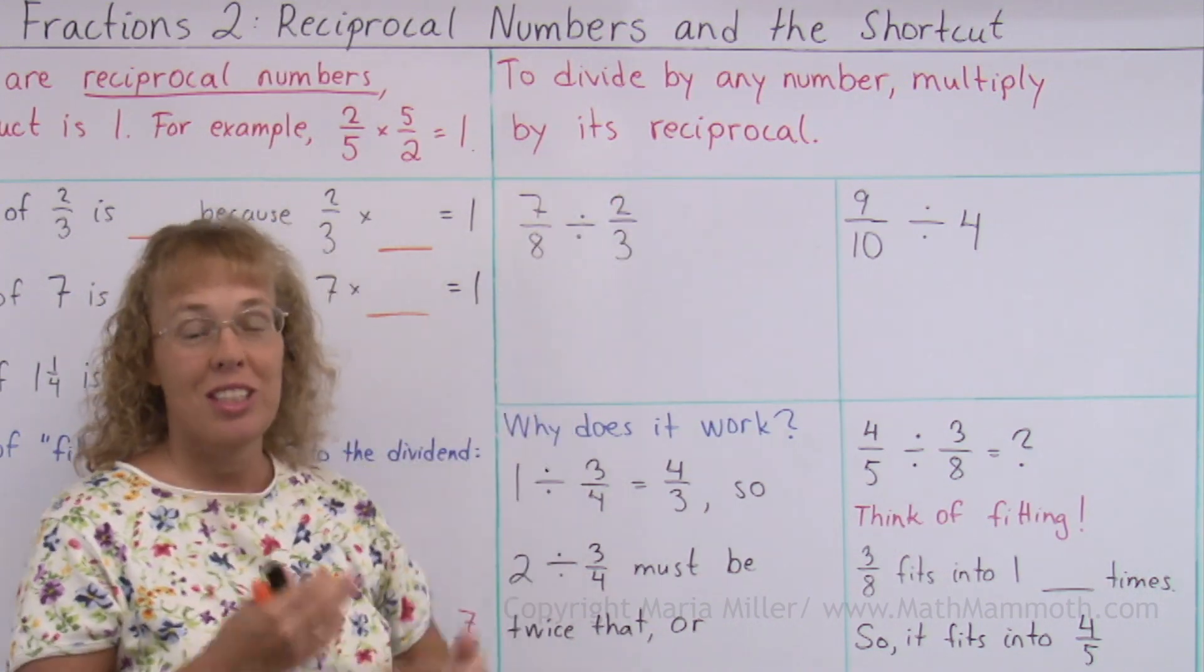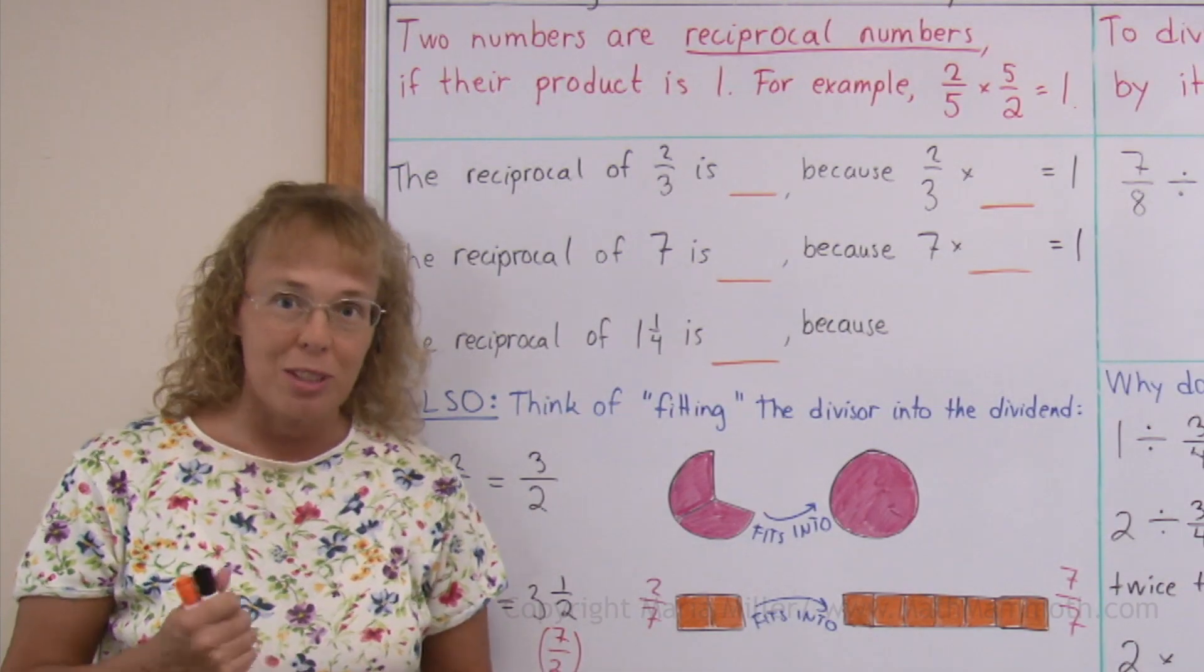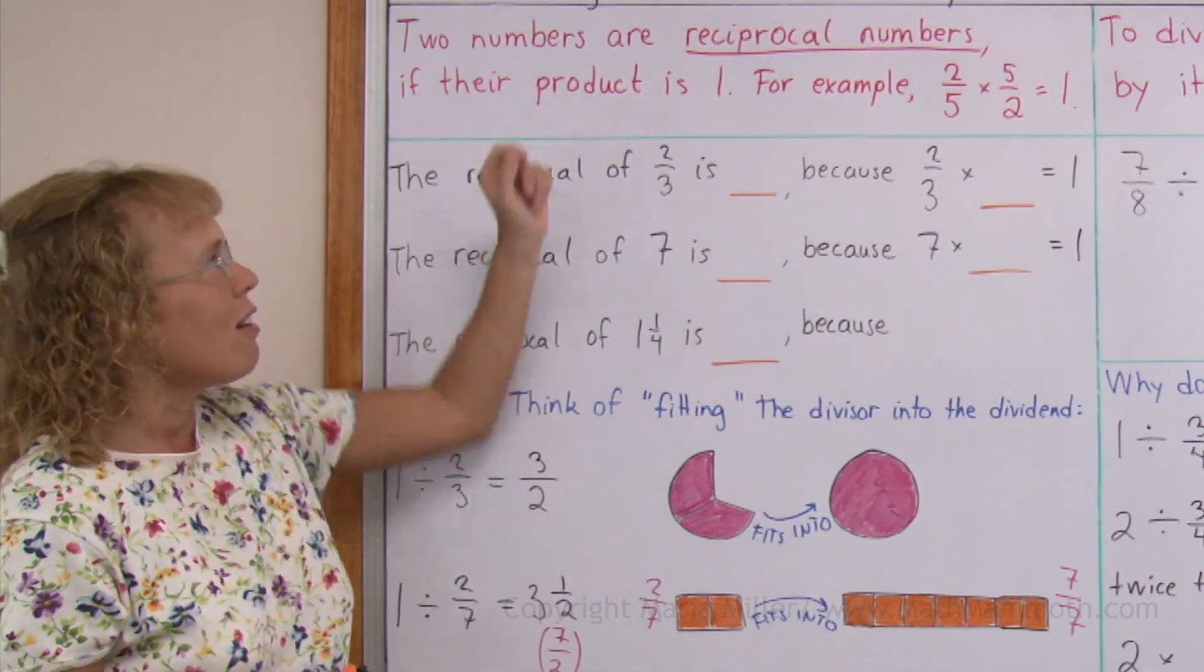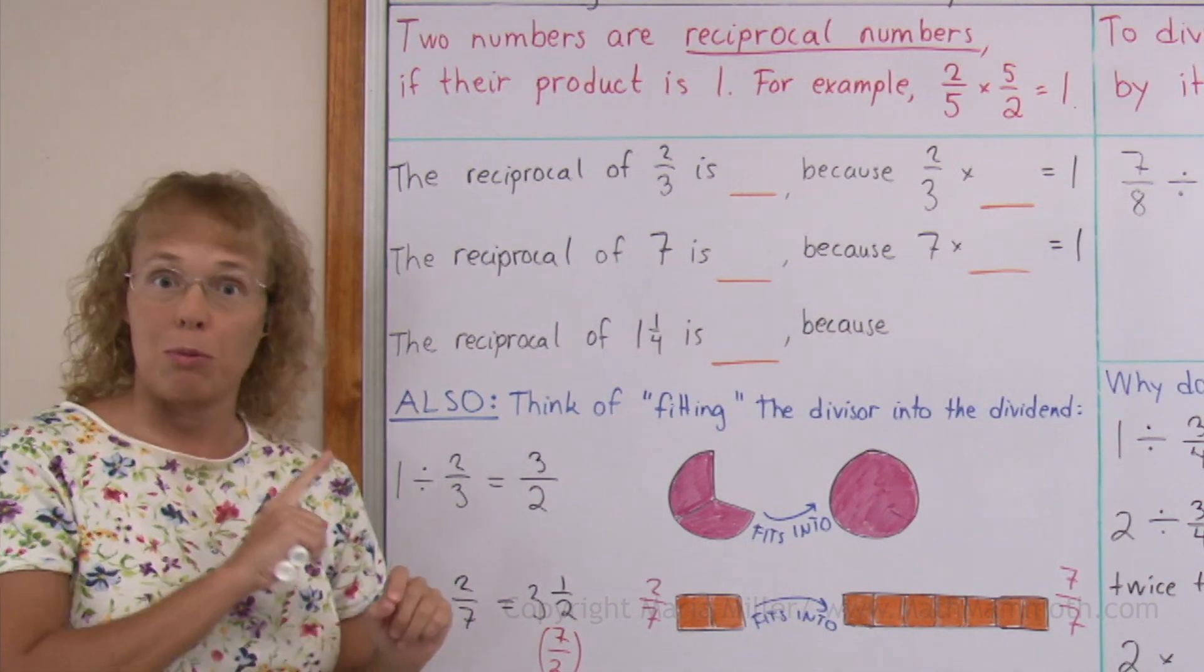Before we study this shortcut, we need to study reciprocal numbers first. What are reciprocal numbers? Two numbers are reciprocal numbers if their product is 1. If you multiply them, you get 1.